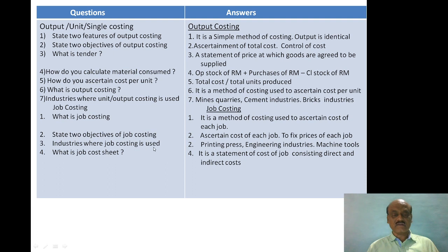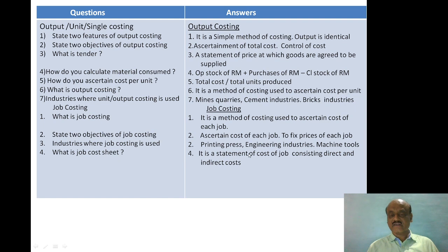Industries where job costing is used include: printing press, engineering industries, machine tool industries, and automobile workshops. A job card is a statement of cost of a job, consisting of direct and indirect costs.